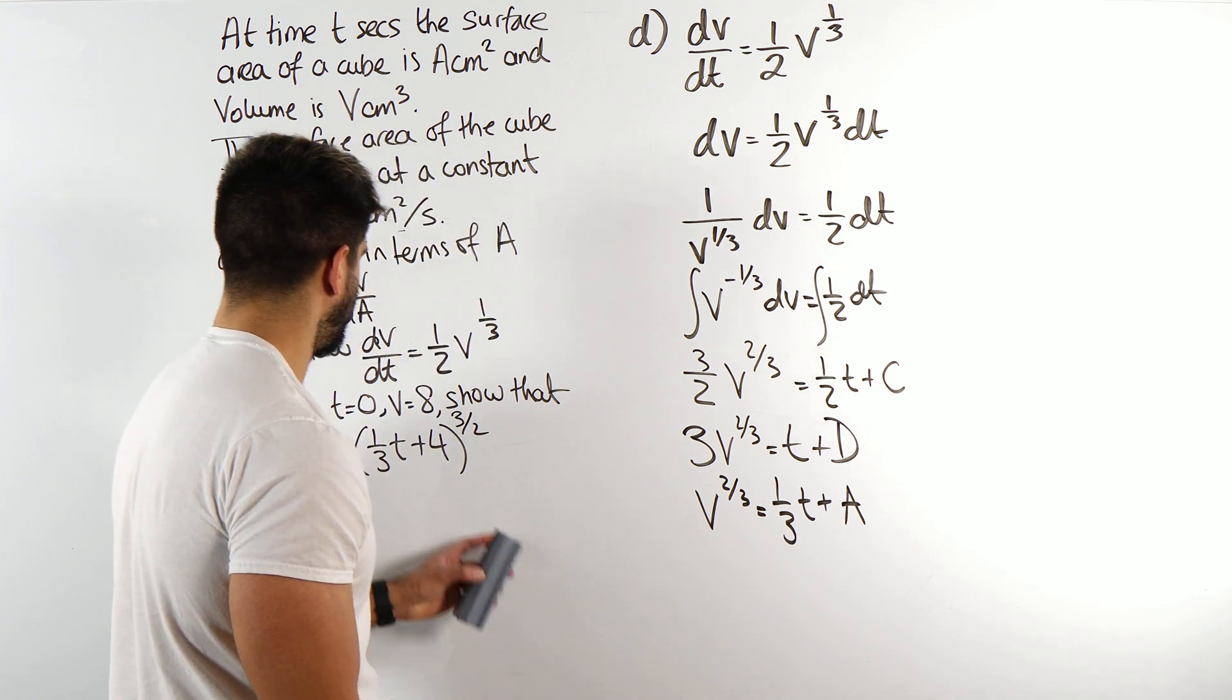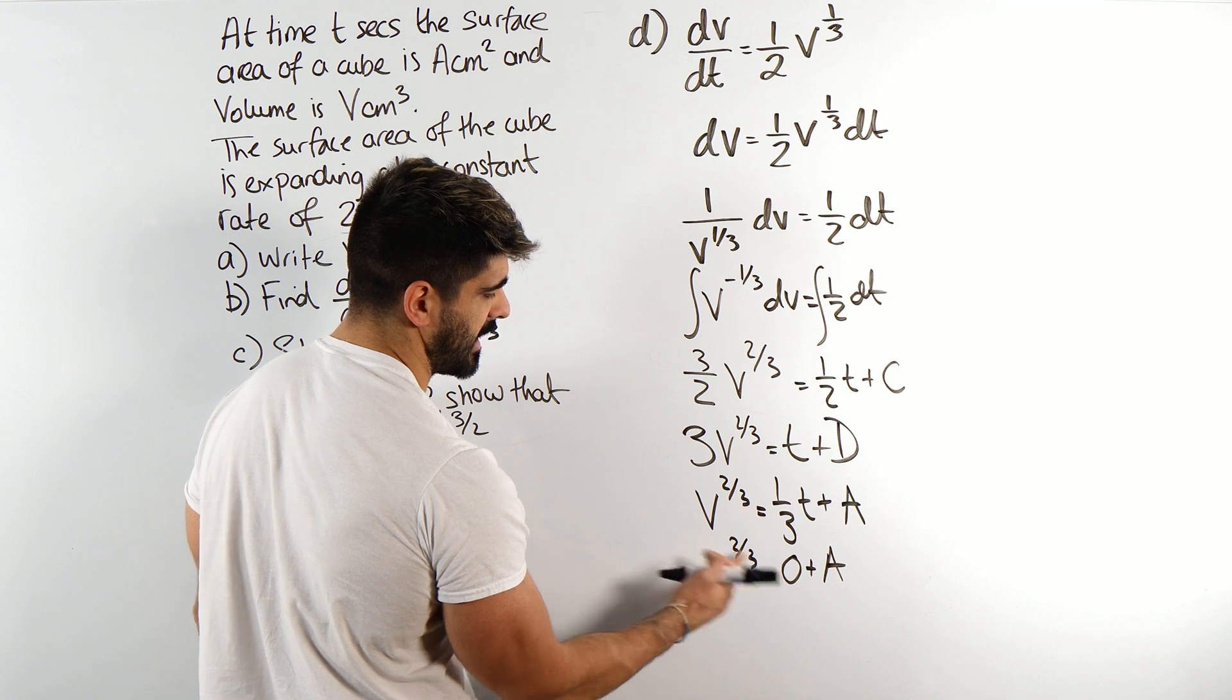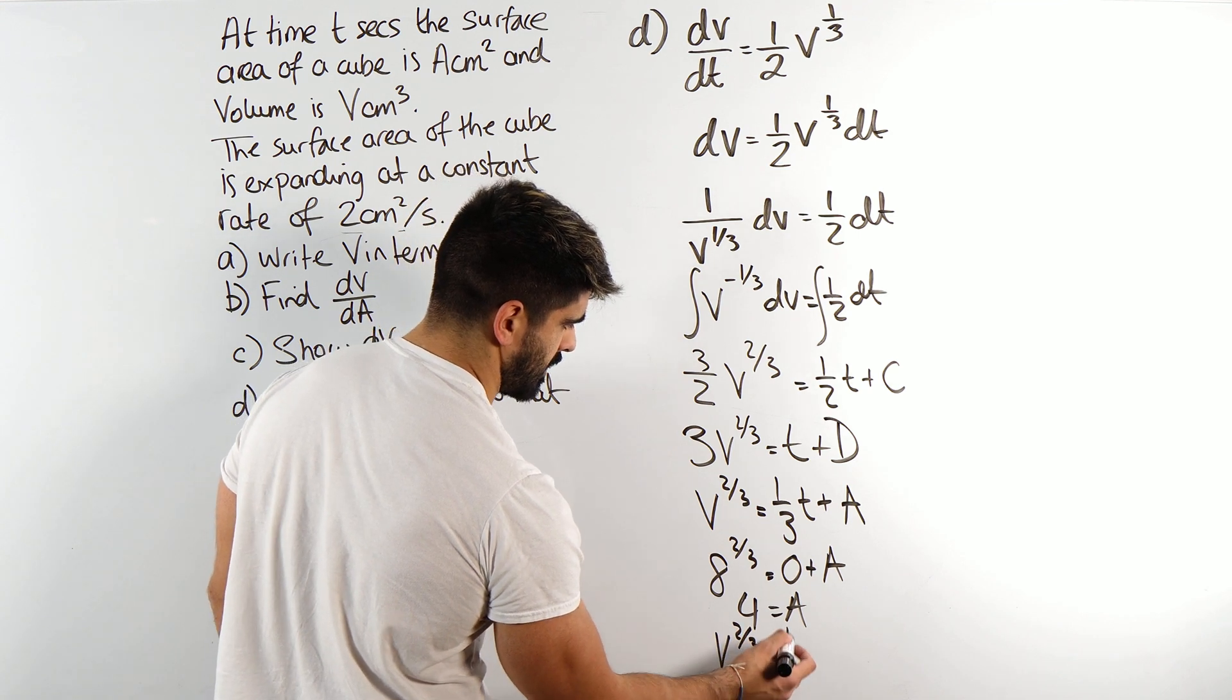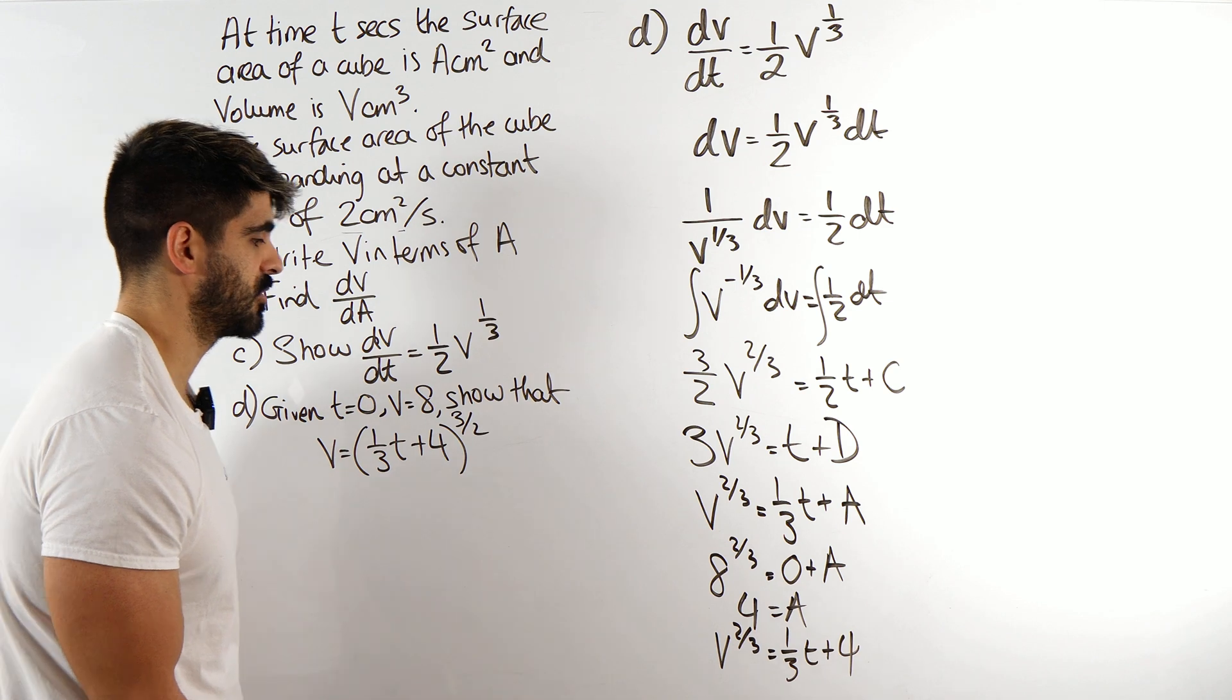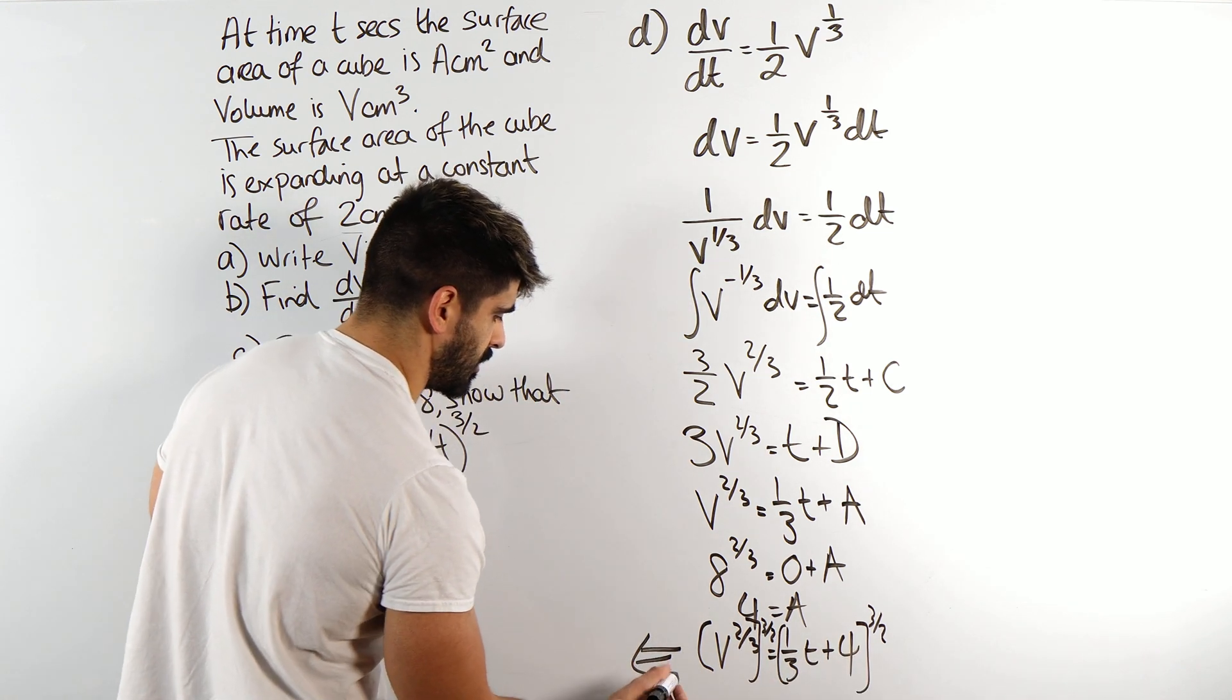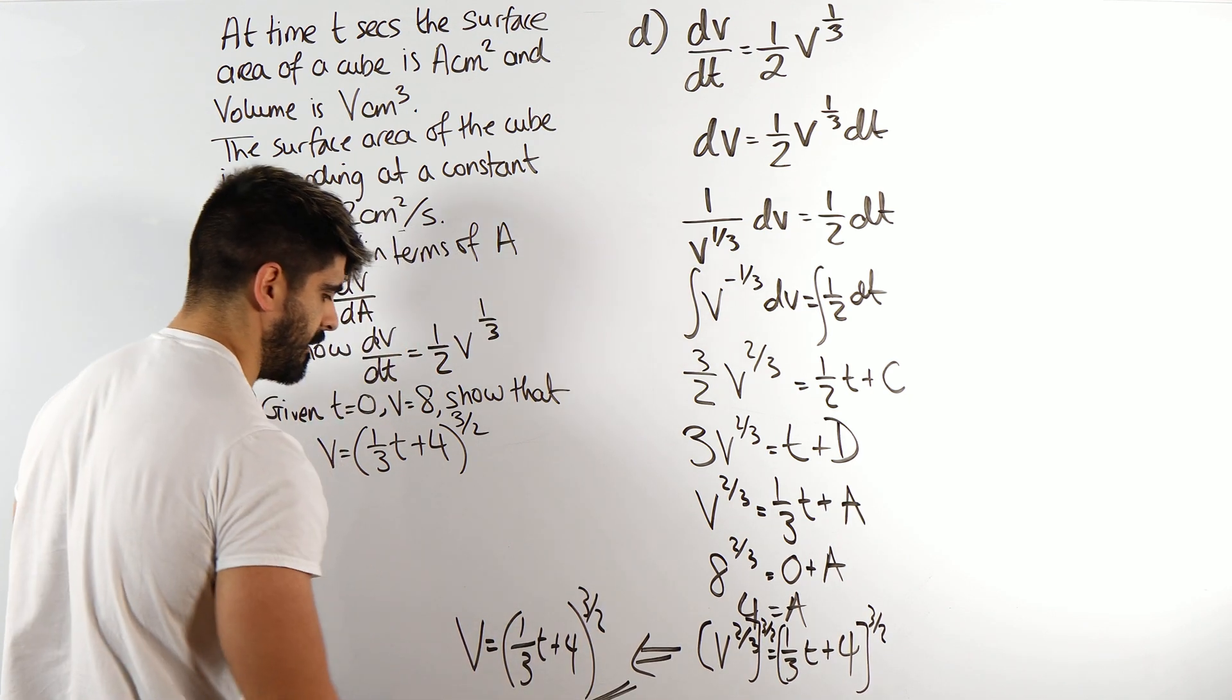Now we need to work out what that constant A is. We can sub in our values when t is zero, V is eight. So we get eight to the power of two thirds is zero plus A. Now here when we do eight power of two thirds you cube root that is two, two squared is four. Okay, so we have V to the power of two thirds is one third t plus four. And then we're basically done because they said they wanted this power of three over two. Here we're just going to raise both sides to the power of three over two to basically get rid of those fractional powers. And there we go, we get V is one third t plus four raised to the power of three over two. And that is our answer.